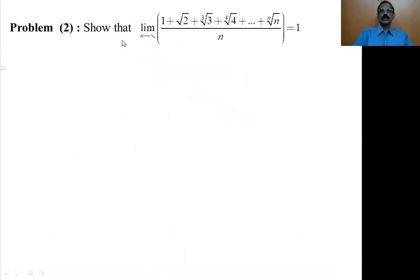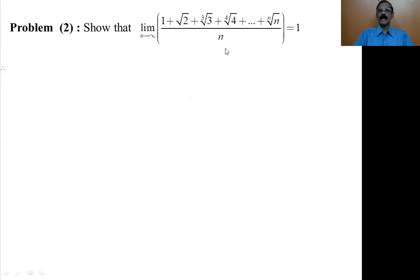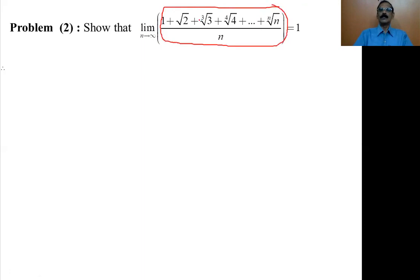Now we will show that the limit of (1 + √2 + ∛3 + ⁴√4 + … + ⁿ√n) divided by n as n tends to infinity is 1. Looking at this expression — first term, second term, third term, fourth term, up to the nth term, all divided by n — this looks like the arithmetic mean of n terms.